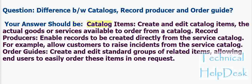Question: What is the difference between catalog items, record producers, and order guides? Catalog items are the actual goods or services available to order from a catalog. Record producers enable records to be created directly from the service catalog — for example, allowing customers to raise incidents from the service catalog. Order guides create and edit standard groups of related items, allowing end users to easily order these items in one request.